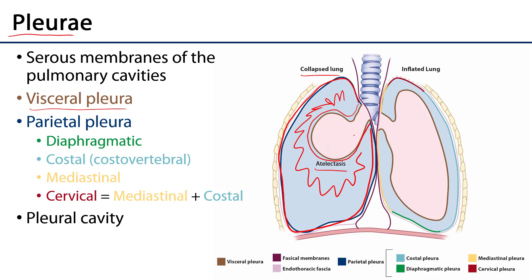On the right-hand side here — that would be audience right, not donor right — we can see how the various layers of the parietal pleura can be further classified. For instance, adhering inferiorly to the diaphragm in green we have the diaphragmatic pleura. Adhered to the ribs and intercostal spaces, meeting that diaphragmatic pleura, we have the costal, also known as the costovertebral, pleura. Lining the shared boundary between the pulmonary cavity and the mediastinum we have the mediastinal pleura, which also meets the diaphragmatic pleura inferiorly.